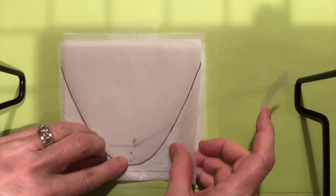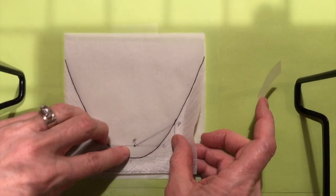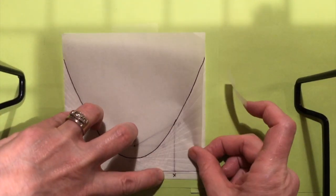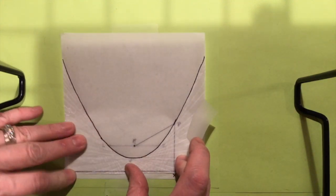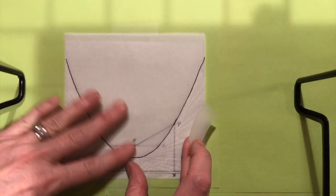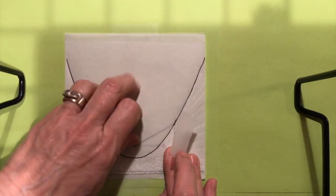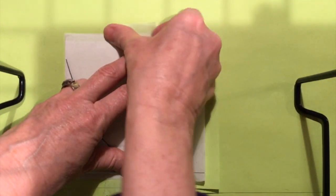So once again, I'm going to line my middle point up. Line my line up with the layers underneath. And then I'm going to tape it down at the top.